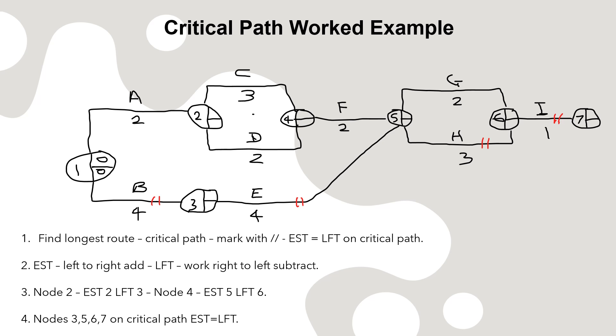Then you go via H, which is three. Eight and three is eleven, so node six will be eleven-eleven. Activity I is one, so the overall project in node seven, that will be twelve and twelve. Do not get put off by the terminology. If node three is four and four, that simply means the early start time of E, activity E, is four. The latest finish time of B is four.